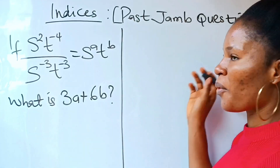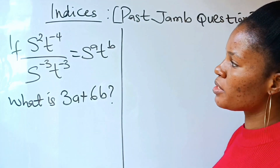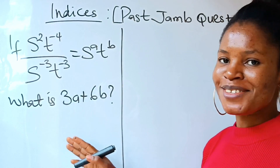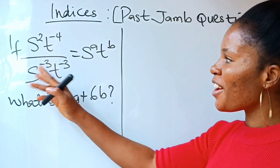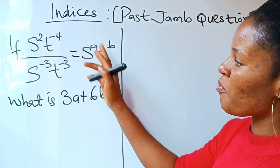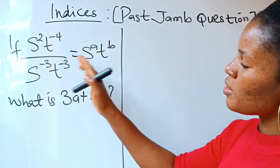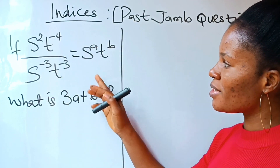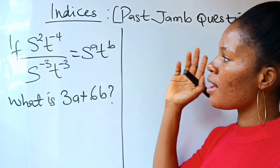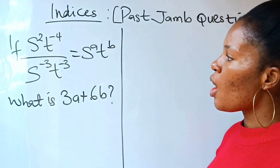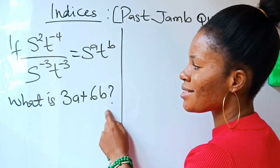This is a PAST/JAMB question. We are asked: if s raised to the power of 2, times t raised to the power of minus 4, all over s raised to the power of minus 3, times t raised to the power of minus 3, is equal to s raised to the power of a, times t raised to the power of b, what is 3a plus 6b?